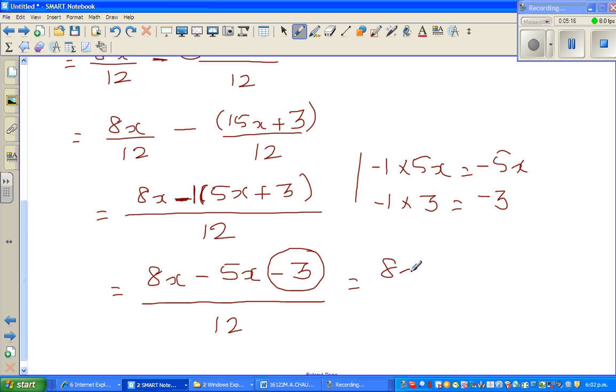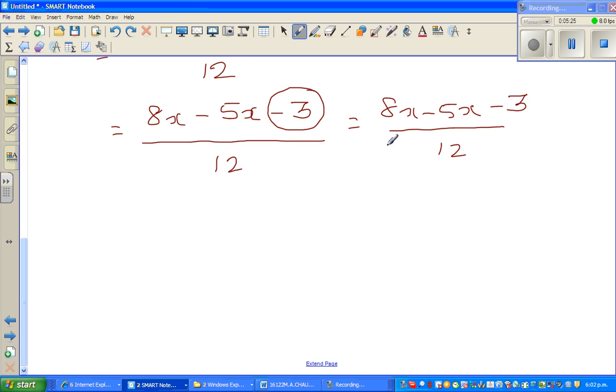So finally, this is 8x minus 5x minus 3 over 12. You can do a few more steps here. So 8x minus 5x is 3x, minus 3 over 12.